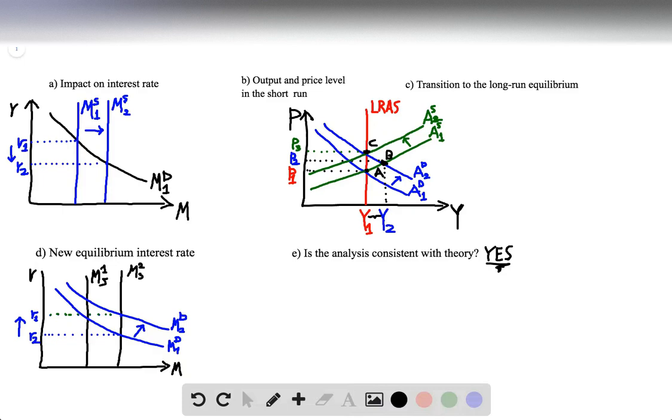So what is happening here is that price level adjusts once again. Equilibrium interest rate goes up. And this is what is actually causing the shift of the output, the fall, and go back to its long-run level.